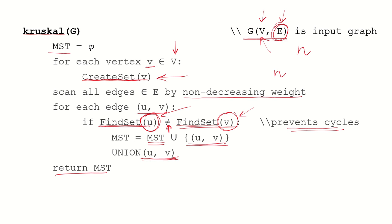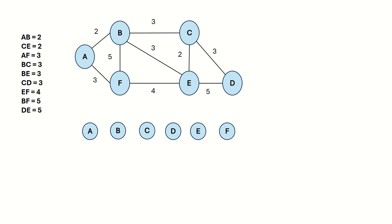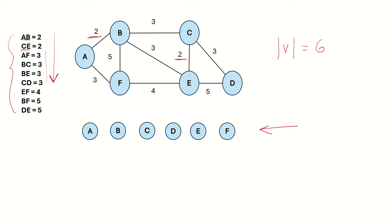Let's take an example to see how this algorithm works. Our input graph has 6 vertices, so our final MST will also have 6 vertices and the number of edges will be 6 minus 1, which is 5. Initially we create disjoint sets with one vertex each. We also scan the edges and arrange them in non-decreasing weight order: starting with edges AB and CE at minimum weight, then edges with weight 3, weight 4, weight 5, and so on. If two edges have the same weight, we can add them in any order.